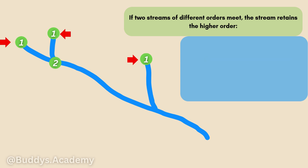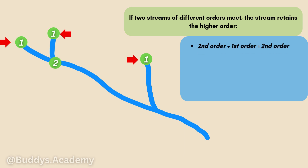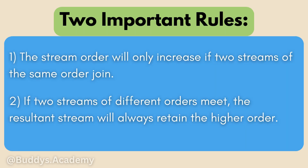But what happens if two streams of different orders meet? We need to understand that the stream that forms will always retain the higher order. So if a second order meets a first order, the stream that forms will be a second order stream. If a third order stream meets a second order stream, the stream that forms will be a third order stream. So there are two general rules to remember: the stream order will only increase if two streams of the same order join, and if two streams of different orders meet, the resulting stream will always retain the higher order.